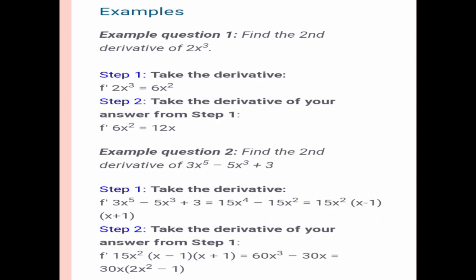So, example number 2, we have to find the second derivative of 3x⁵ - 5x³ + 3. So first, take the derivative of 3x⁵ - 5x³ + 3, that would be 15x⁴ - 15x². And then, step 2.